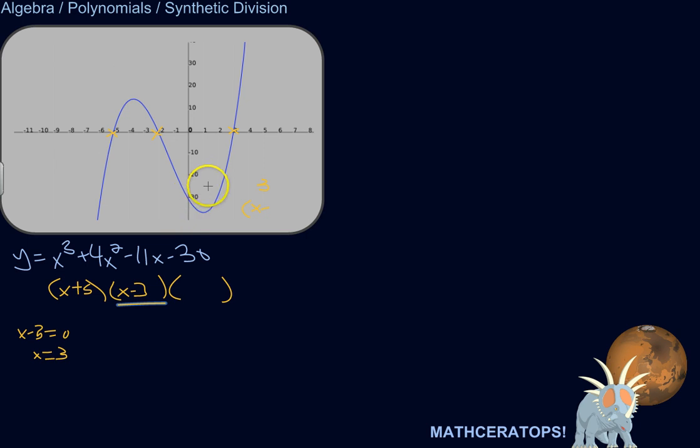Now, synthetic division is a way of determining whether something is a factor of a polynomial. So, let's just back up, what's a factor?